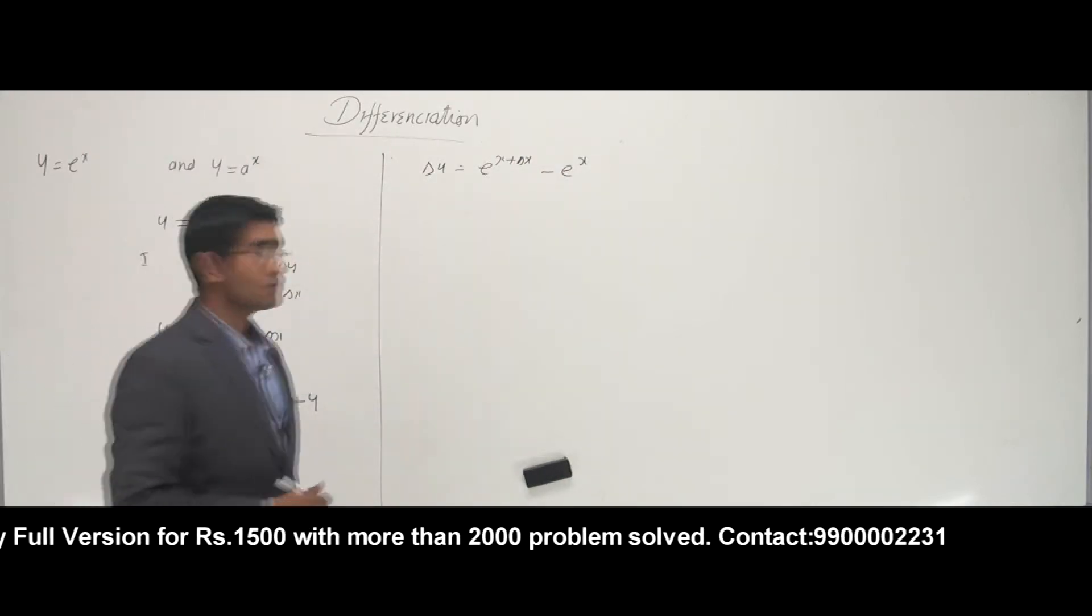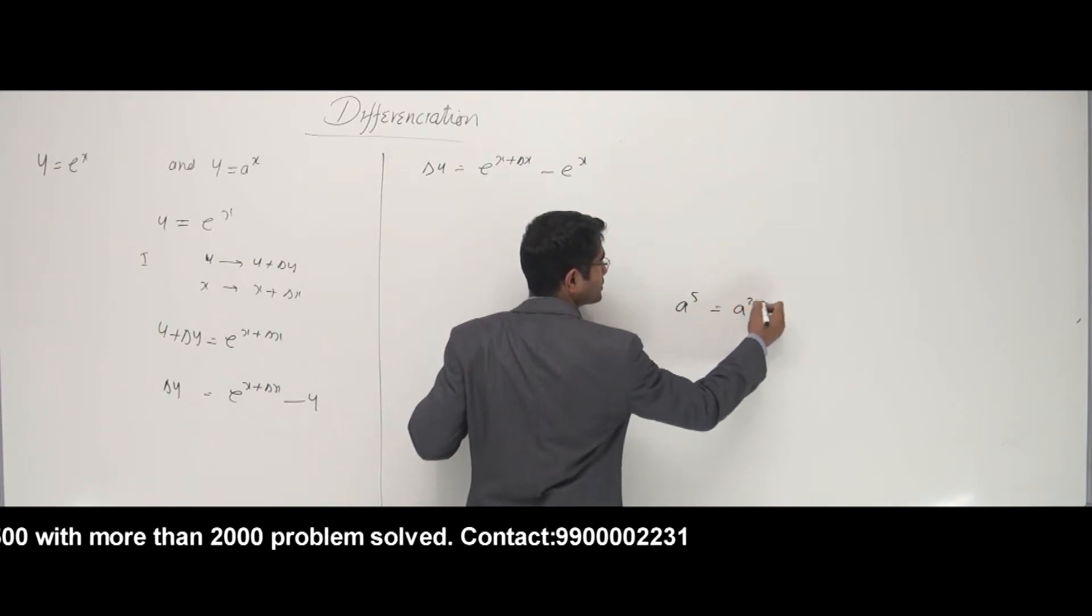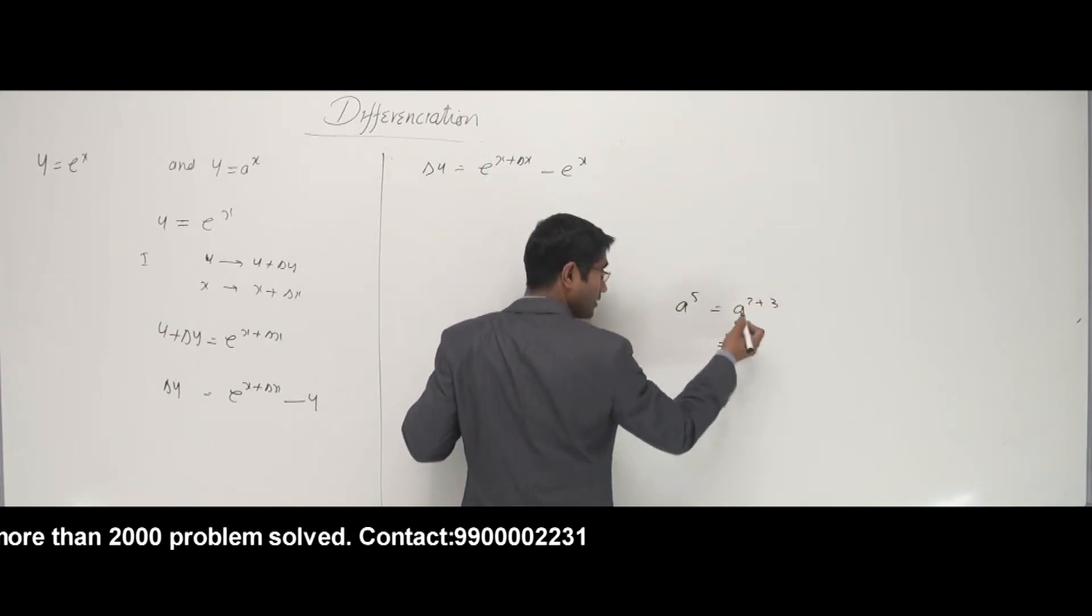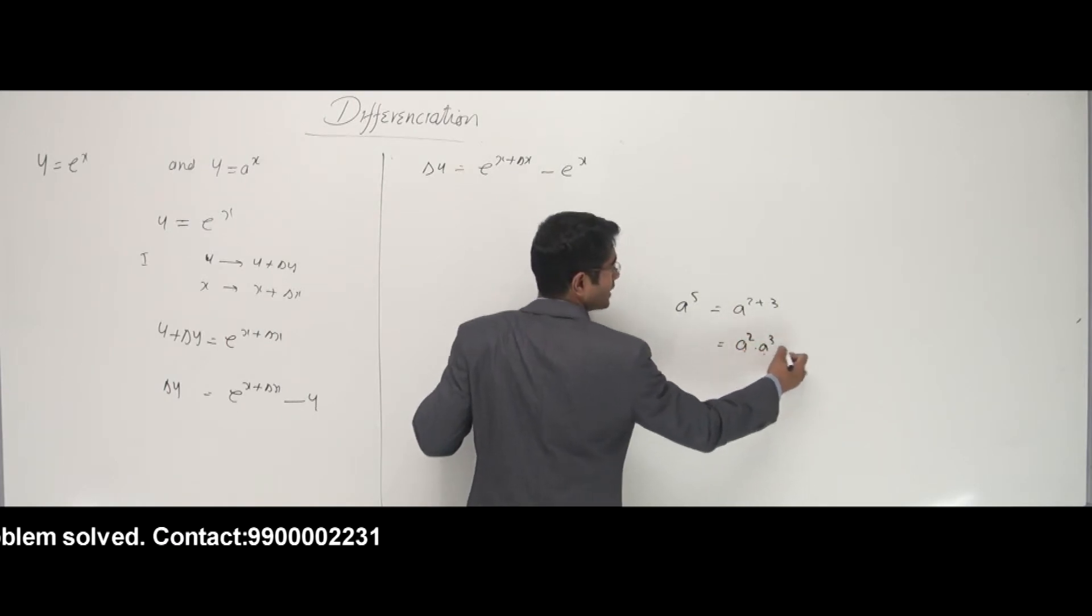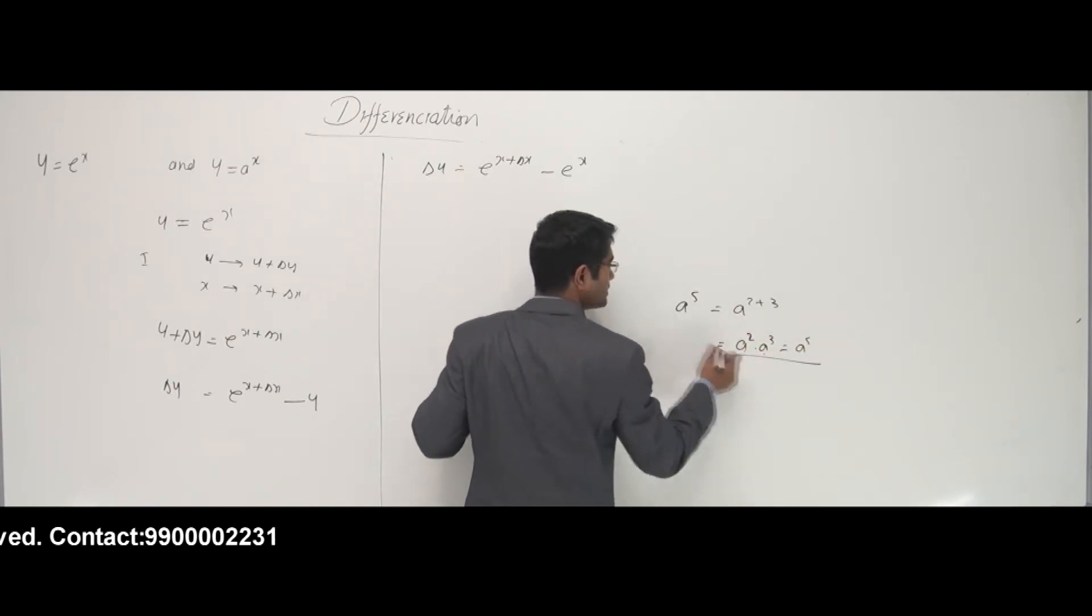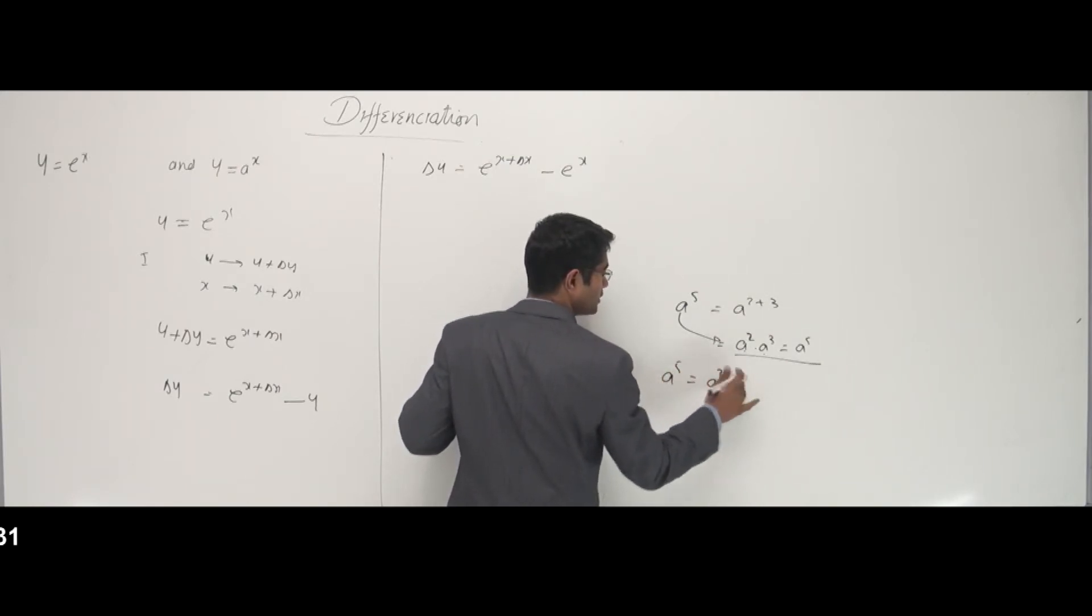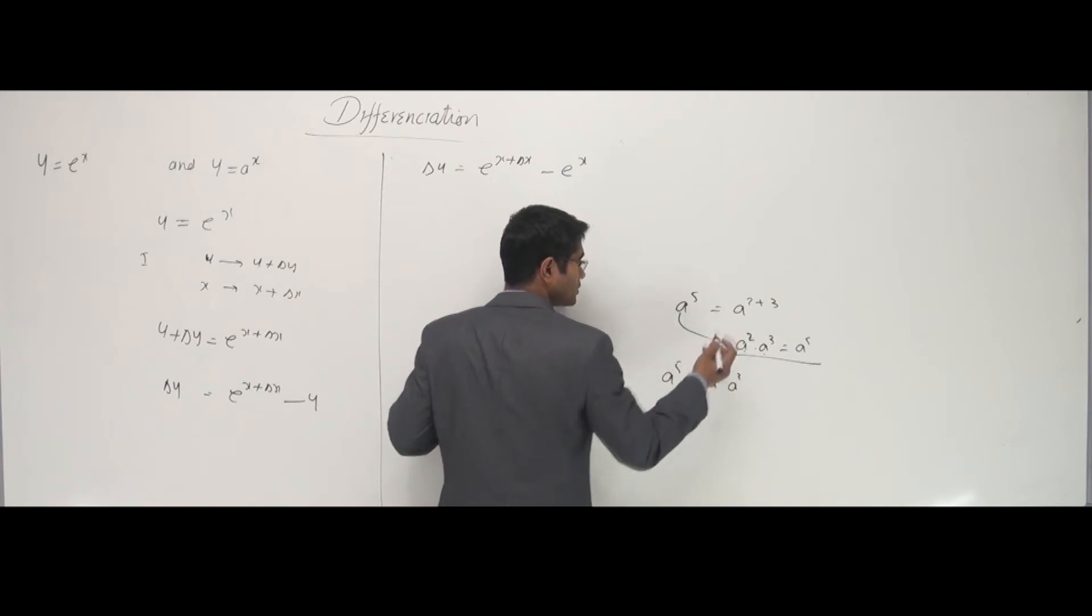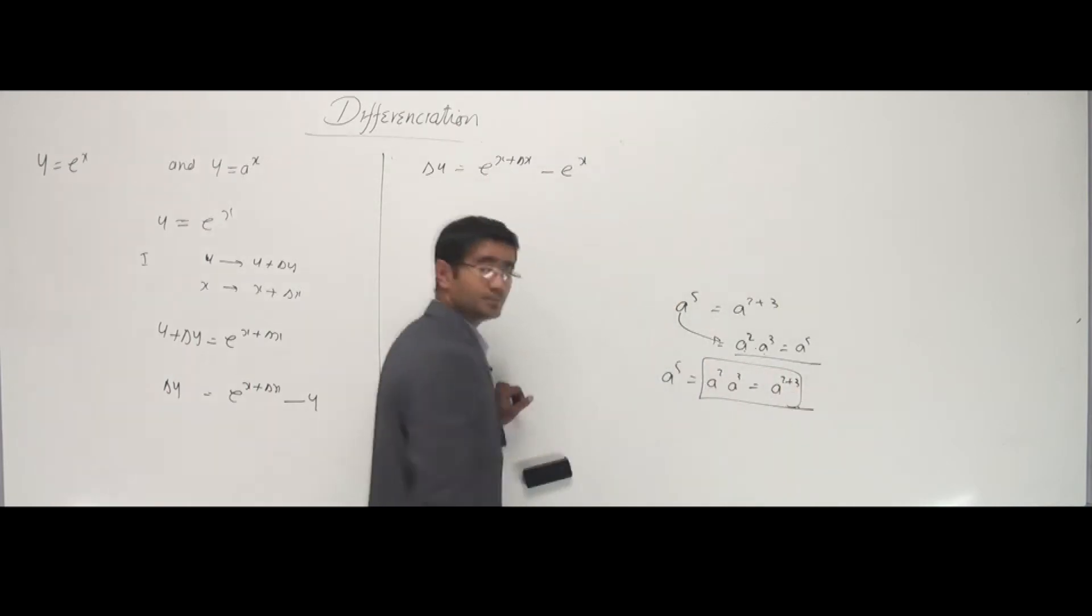Now, we need to understand one thing from indices. If I have a power of 5, can I write this as a power 2 plus 3? Yes, I can. And I can write this as a power 2 into a power 3. See, if you multiply them, anyway it is a power 5. So it means these guys are the same. I can write a power 5 as a power 2 into a power 3, or it was also fine to write it as a power 2 plus 3.